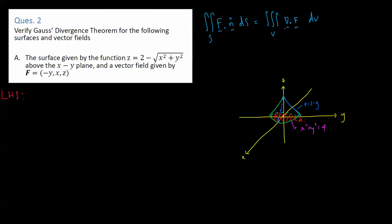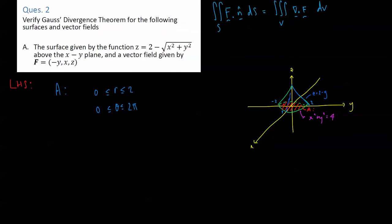We're going to calculate the left-hand side first, show it equals something, then compute the right-hand side separately, and hopefully they'll be equal. For region A, it's clearly a circle, so we'll use polar coordinates with r and theta as our limits. The radius goes out to 2 (since the circle has radius 2), so r goes from 0 to 2, and theta goes all the way around from 0 to 2π. This integral is equivalent to the area integral of F dotted with n over region A on the xy-plane.